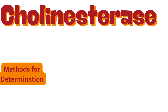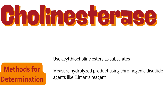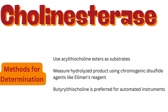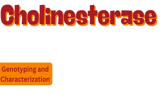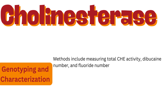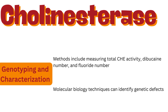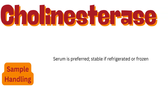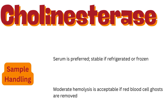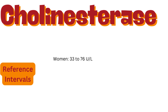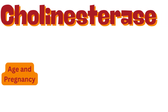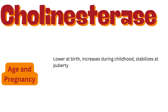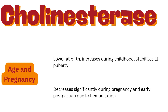Methods for determination: assays use acylthiocholine esters as substrates and measure the hydrolyzed product using chromogenic disulfide agents like Ellman's reagent. Butyrylthiocholine is preferred for automated instruments. Genotyping methods include measuring total CHE activity, dibucaine number, and fluoride number; molecular biology techniques can identify genetic defects. Sample handling: serum is preferred, stable if refrigerated or frozen; moderate hemolysis is acceptable if red blood cell ghosts are removed. Reference intervals for healthy adults: women 33–76 units per liter, men 40–78 units per liter. CHE is lower at birth, increases during childhood, stabilizes at puberty, and decreases significantly during pregnancy and early postpartum due to hemodilution.